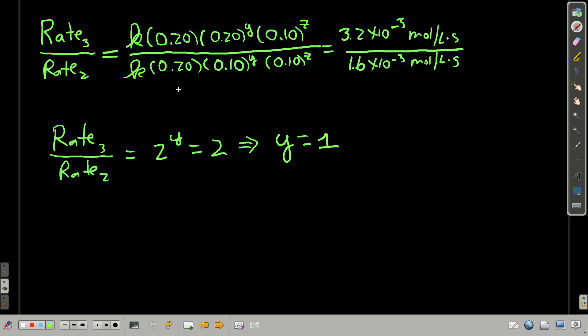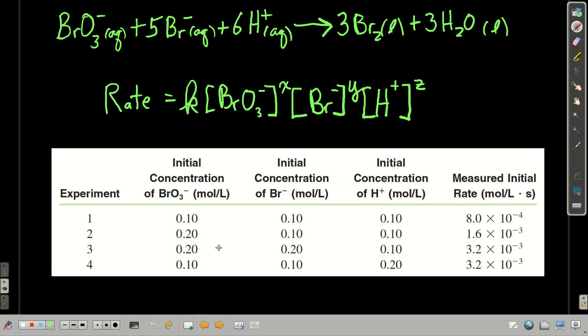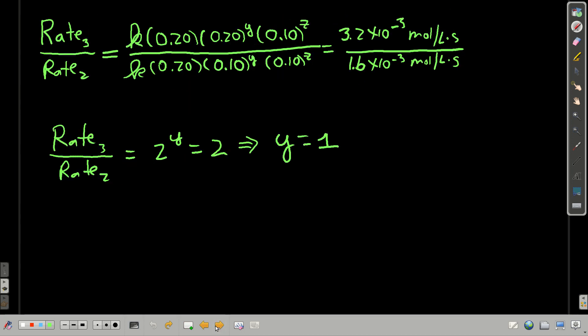So here we picked rate, or I picked rate, experiment three and experiment two. Let's go back and look at why I picked those. Because in experiment three and experiment two, the only thing that changes in terms of concentrations is the concentration of the bromide from 0.1 in 2 to 0.2 in experiment three. It stays the same here, stays the same here, and we have the initial rates.